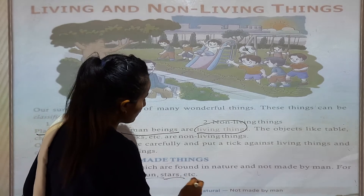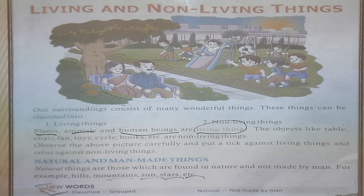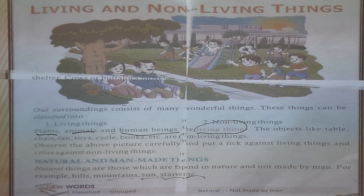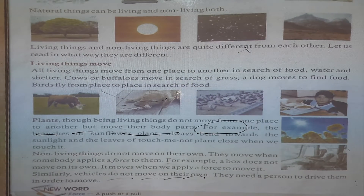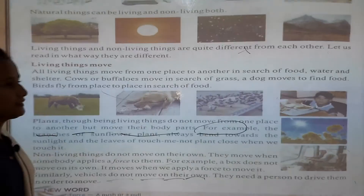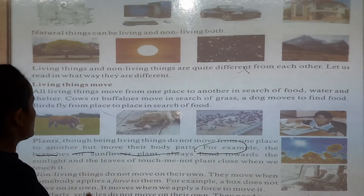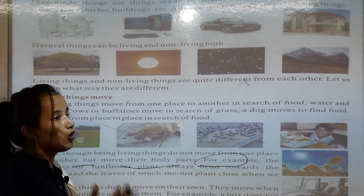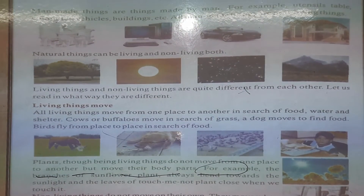Hills, mountains, sun, stars, moon — they are all natural things. In the next page, man-made things. We know man-made things — chair, computer, home — these are man-made things.